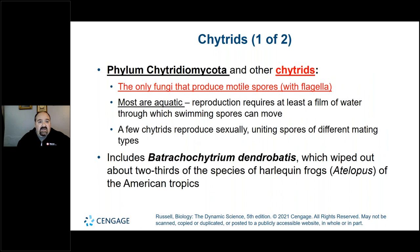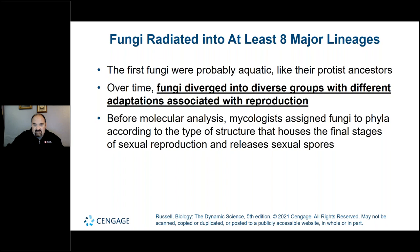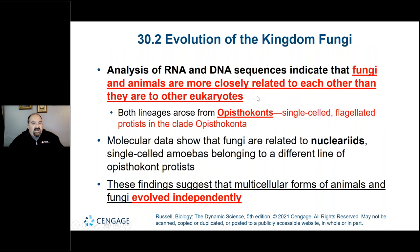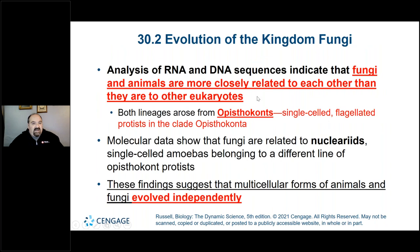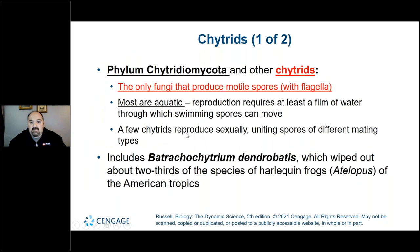The chytrids — chytridiomycota — are the only fungi that produce motile spores with flagella. Both lineages arose from the opisthokonta, single-celled flagellated protists in the clade Opisthokonta. During a stage of development, they have these flagella. Most are aquatic, which makes sense because having water allows those spores to move within it in order to go to another location for favorable conditions to produce more fungi.